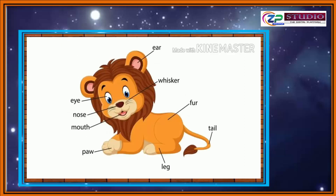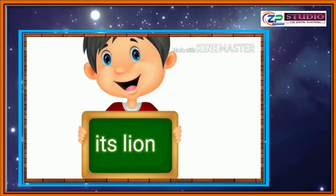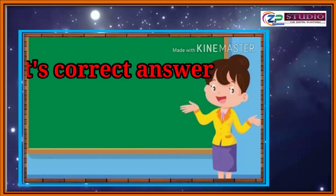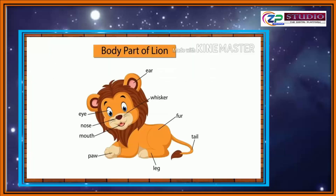Now students, tell me which animal this is. It's a lion! This is a lion. We will see the body parts of the lion: ears, whiskers (misha), fur on the body, eyes, nose, mouth, paw, leg, and tail. Paws are the front legs of the lion, which are useful for hunting.